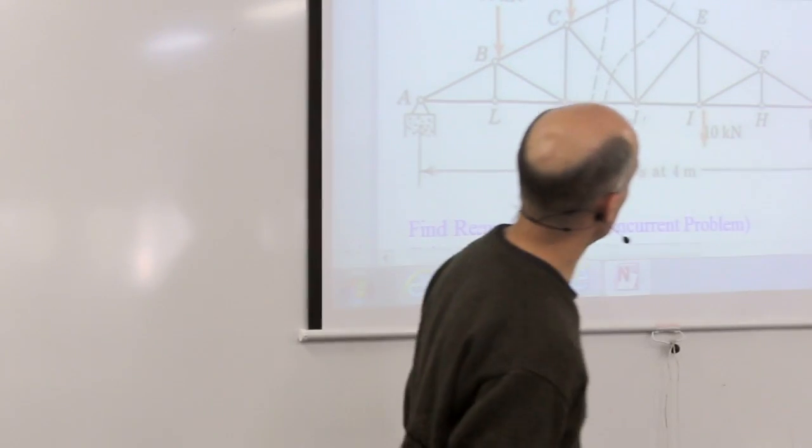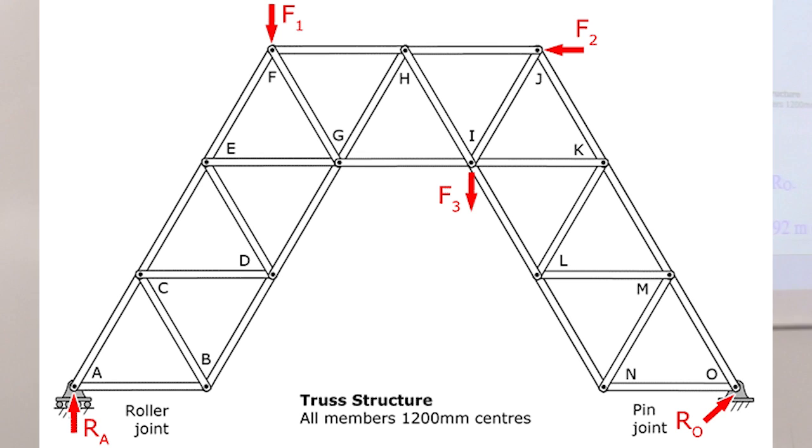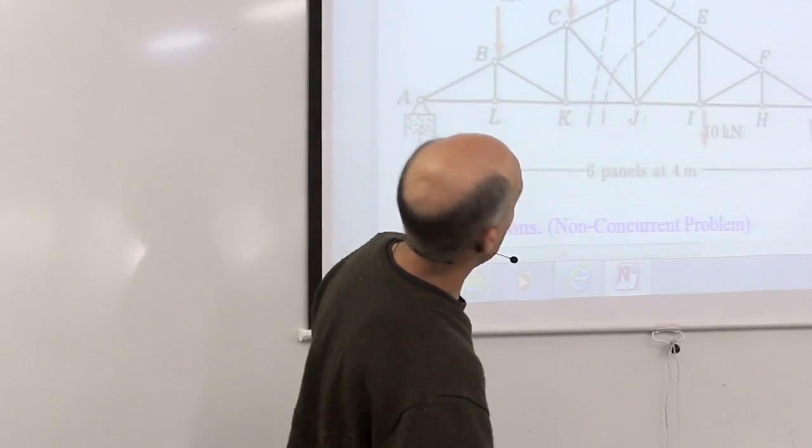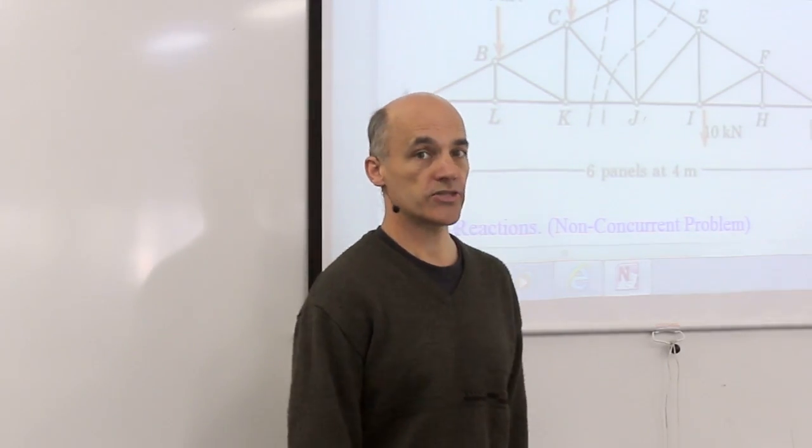Which isn't too bad on a truss like that, but what would happen if you're working on one like this? And you wanted to know what is the force in member GI, you'd have to go A, B, C, D, E, F, and by the time you get there, time's up. We're going to show you another method today, which is the method of sections.